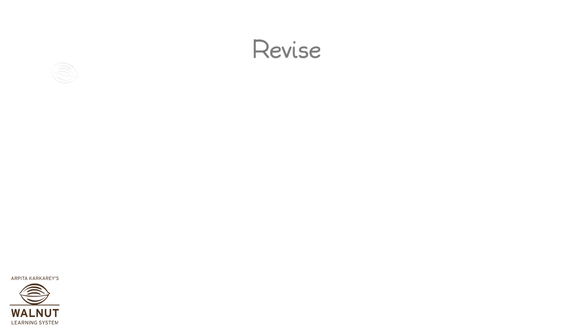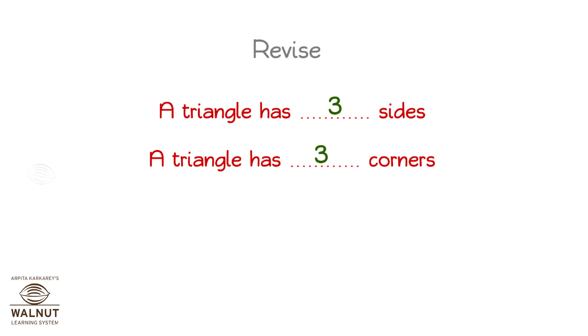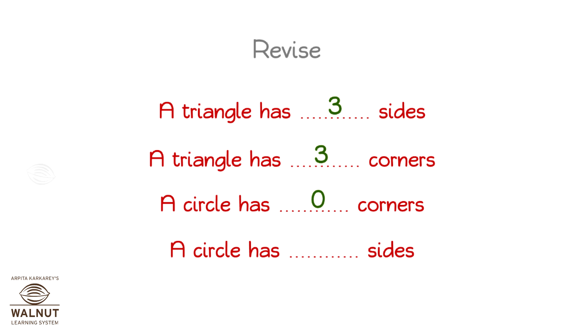Revise. A triangle has three sides. A triangle has three corners. A circle has zero sides. A circle has zero corners.